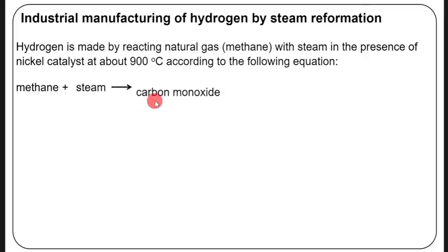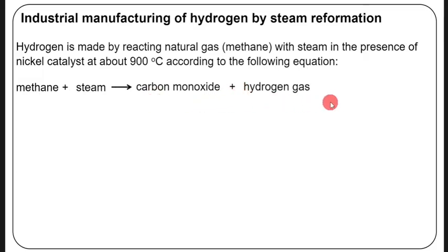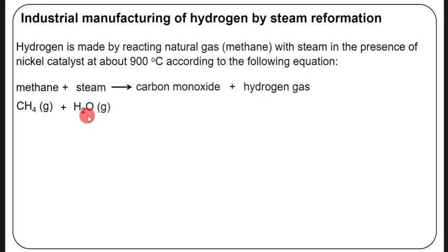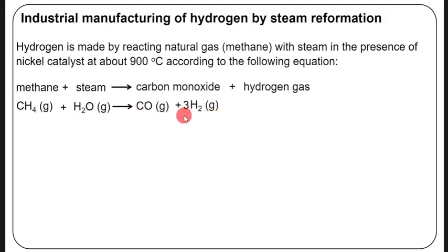The reaction of methane with steam gives carbon monoxide plus hydrogen gas. As a chemical equation: CH₄(g) + H₂O(g) → CO(g) + H₂(g). This equation is balanced as written.